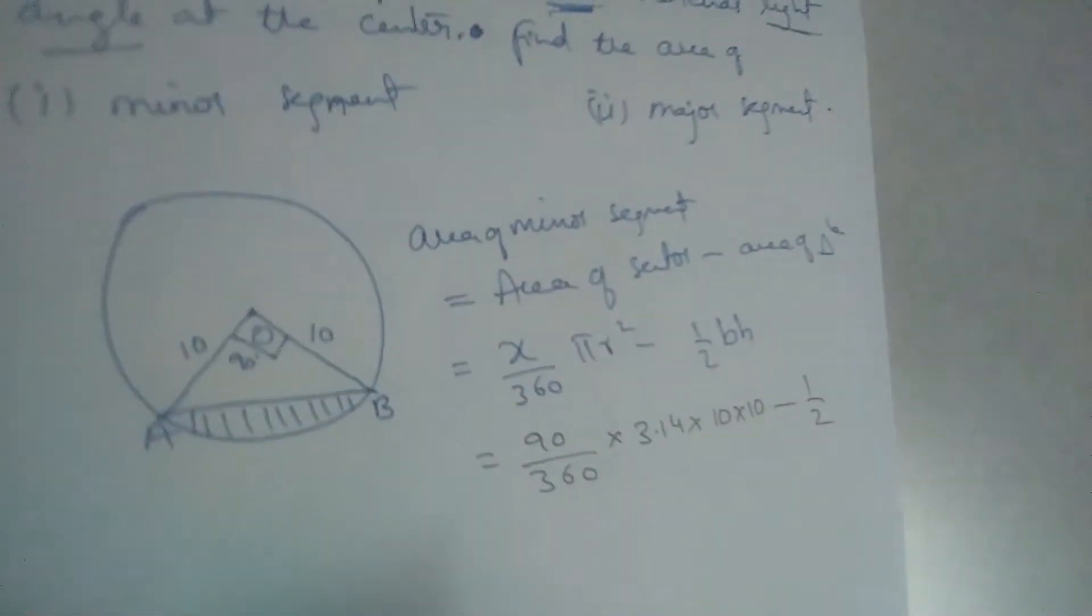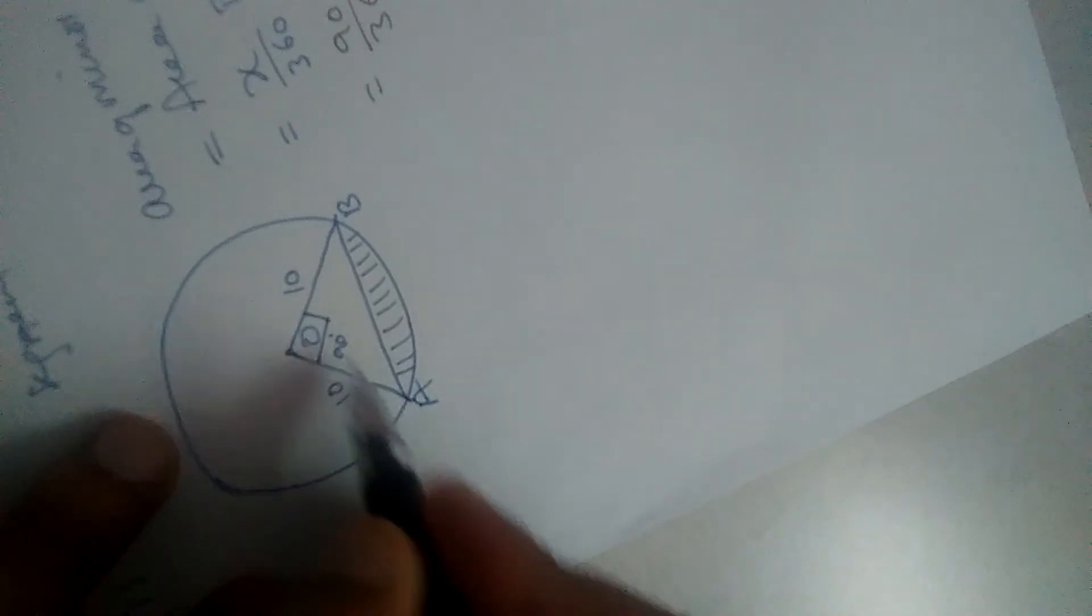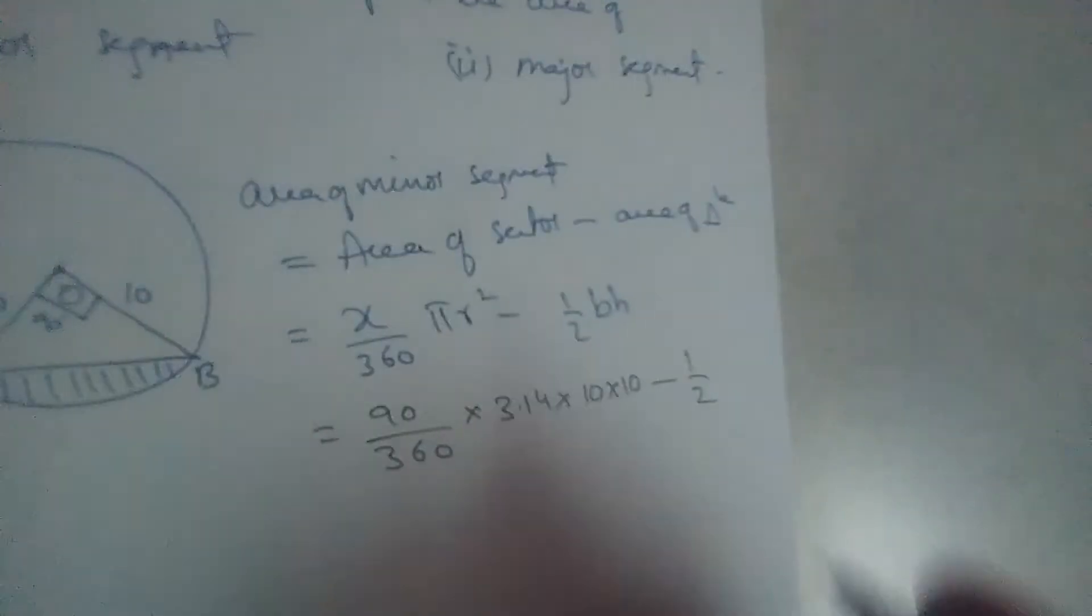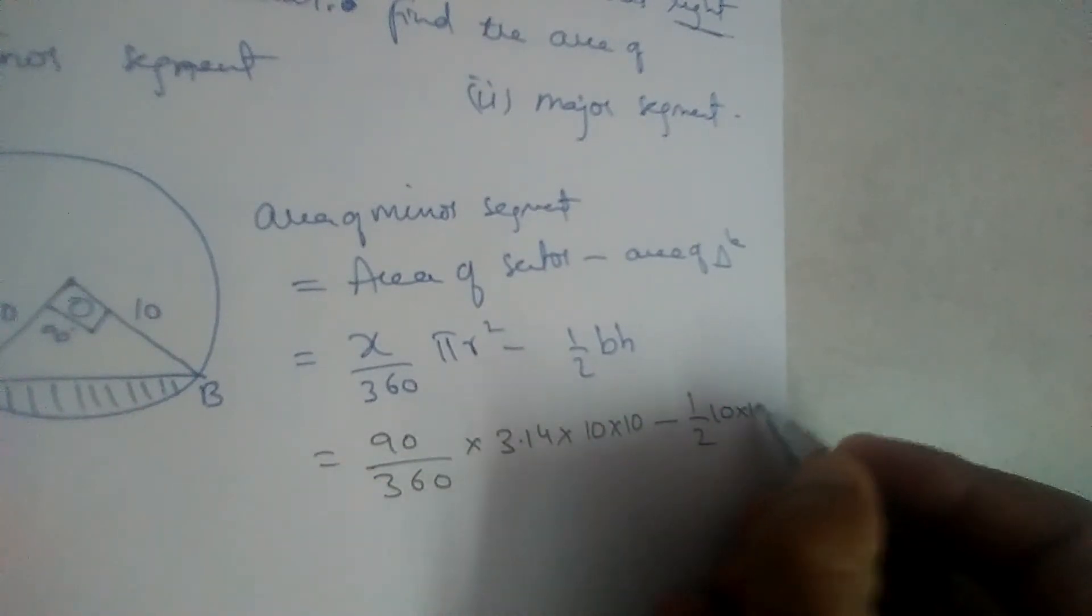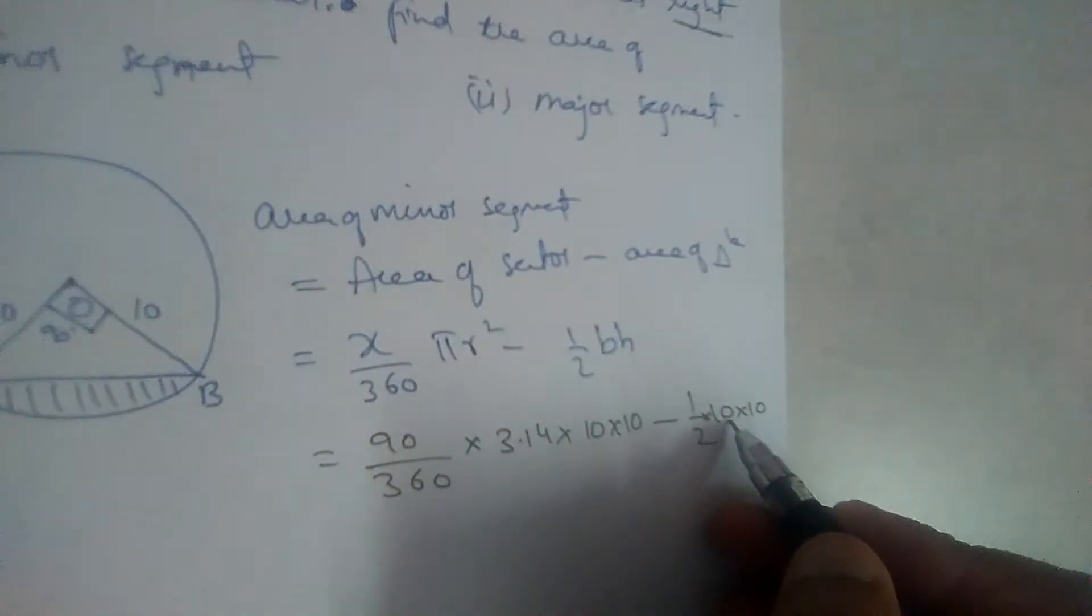See this is a right angle triangle. So base and height. This is the base and this is the height. So base is also 10, height is also 10. So half into base into height.